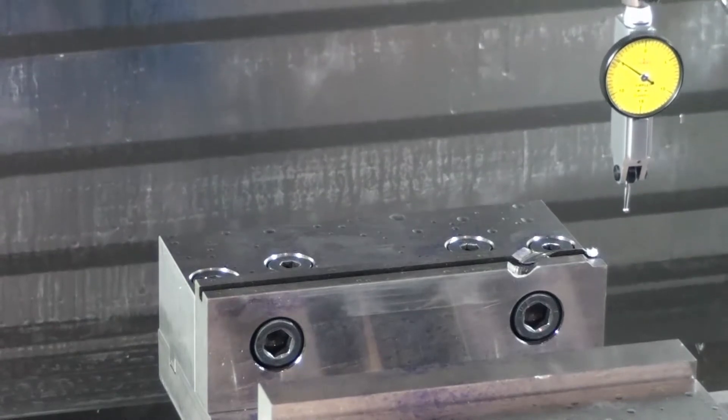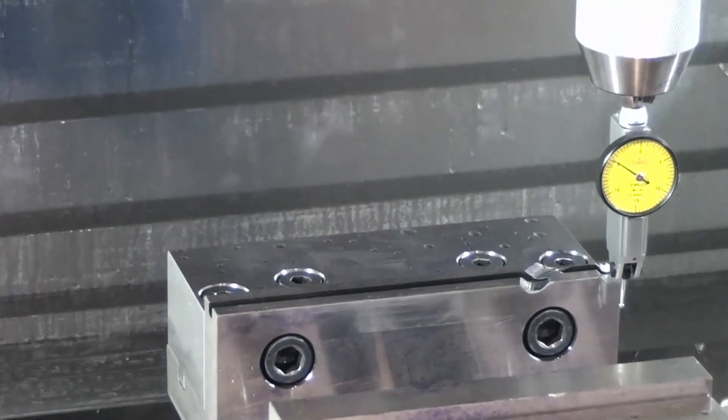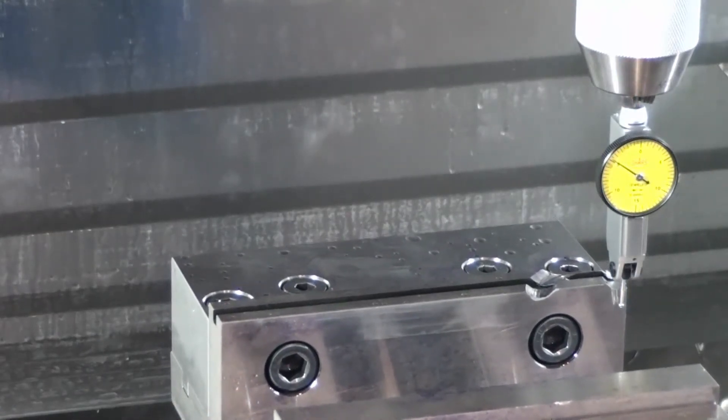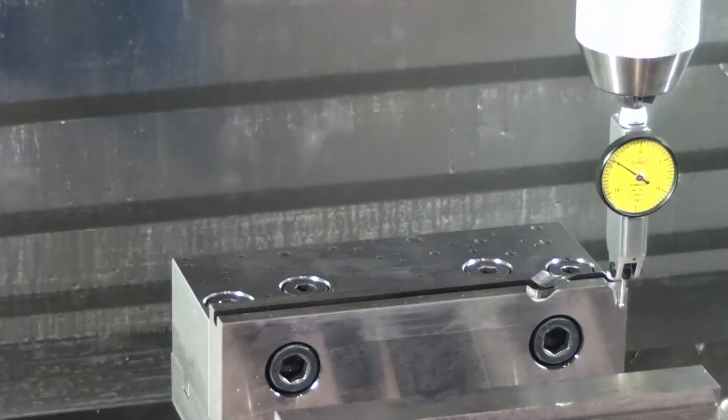So I'm going to bring the indicator down. I am then changing to Y and I'm bringing the indicator to about an eighth of an inch away from the vise. Now I change my increment to one thousandth and this is where I make my final approach between the indicator and the vise jaw.